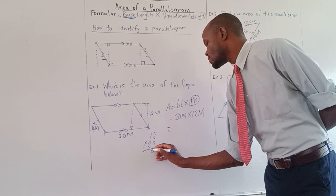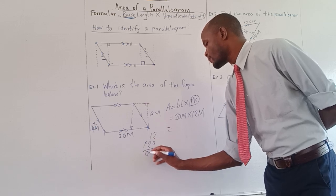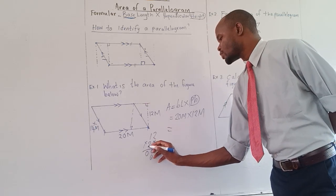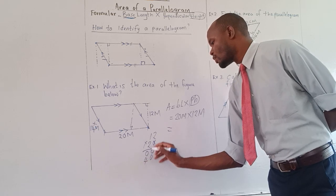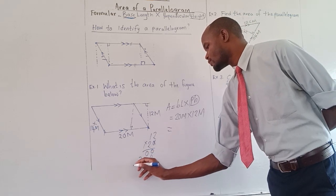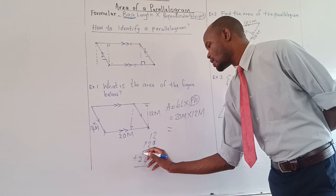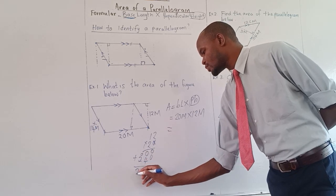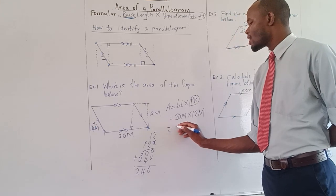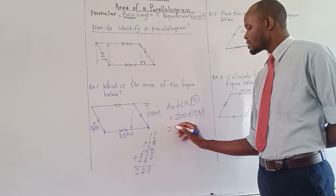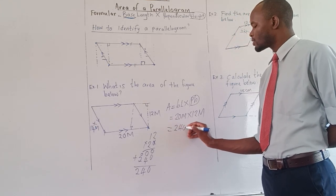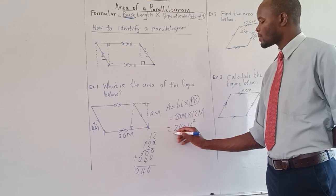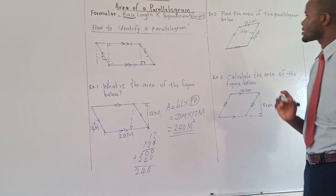So the perpendicular height is 12 meters. You have 12 times 20: 0, 0, then 2 times 2 is 4, 2 times 1 is 2. Adding together gives 240. So the area of this parallelogram is 240 meters square. Remember we are talking about area.